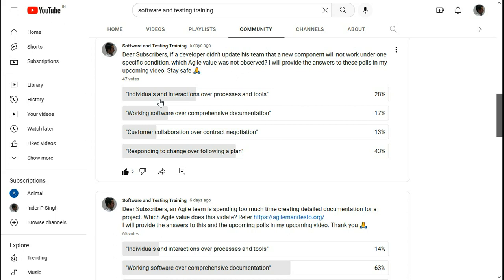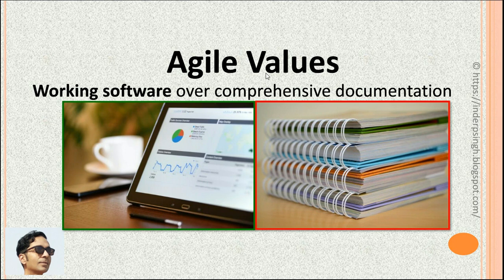The next agile core value is working software over comprehensive documentation. In agile development, the team values documentation on the right also, but values working software on the left more. Focusing on working software, the team may deliver working software incrementally on a regular basis, like every two weeks, without worrying about detailed documentation.